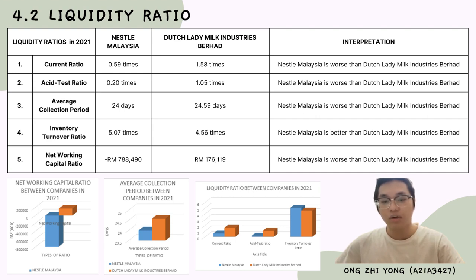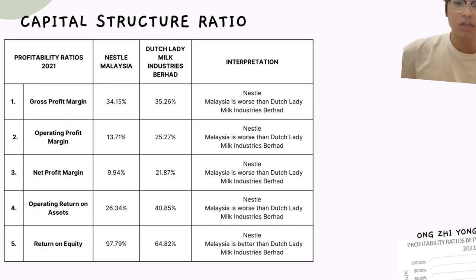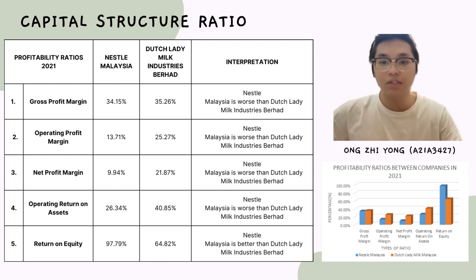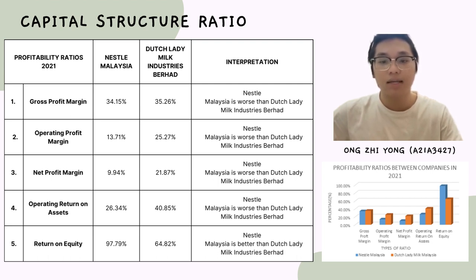Overall, the liquidity ratio of Nestlé Malaysia is worse than Dutch Lady in 2021. Next, capital structure ratio: the debt ratio of Nestlé Malaysia at 80.48% is higher than Dutch Lady at 45.44%. The times interest earned ratio of Nestlé Malaysia was recorded at 21.93 times, less than Dutch Lady's 84.91 times.